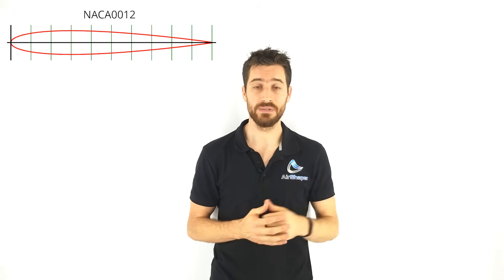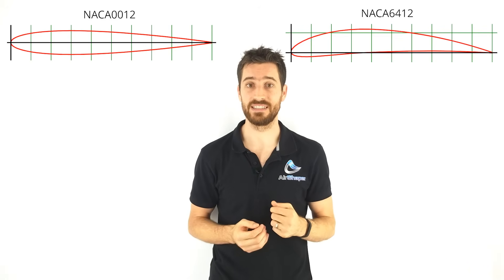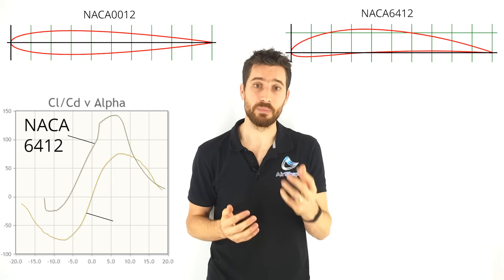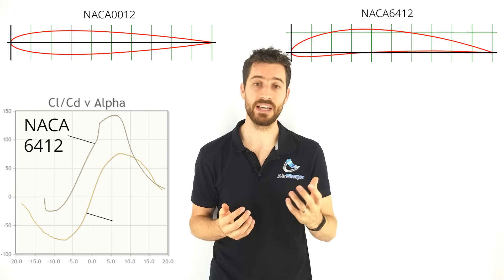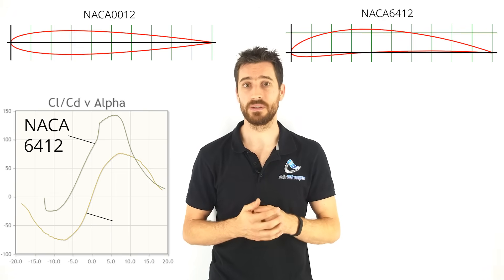With airfoil tools, you can easily compare two different airfoils, like the symmetric NACA 0012 versus the asymmetric NACA 6412. And in this comparison, we can see that the NACA 6412 peaks at a lift over drag ratio of over 140.